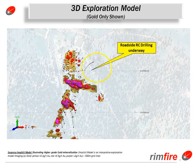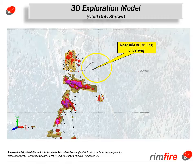Let's now have a look at the 3D exploration model showing gold only. Gold is represented in yellow at greater than 0.2 gram per tonne gold, in red at greater than 0.5 gram per tonne gold, and purple greater than 2 gram per tonne gold. The grid size is shown as 500 metres and the area currently being drilled is at roadside.